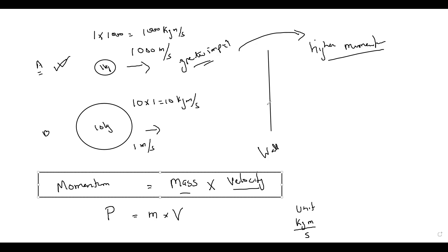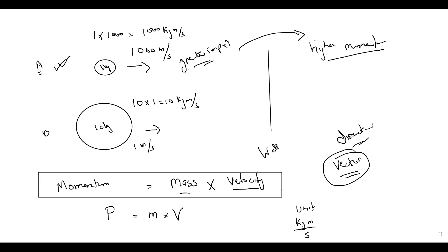Momentum depends on both mass and velocity — the product of mass and velocity — and it is a vector quantity, meaning it has a direction. The direction of momentum is the direction in which the object is moving. In this example, that direction is towards the right.